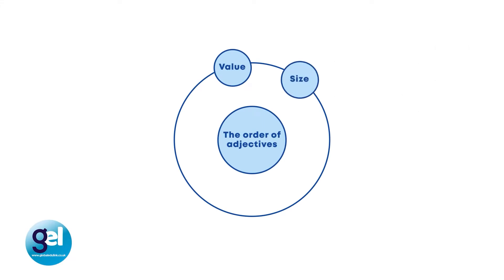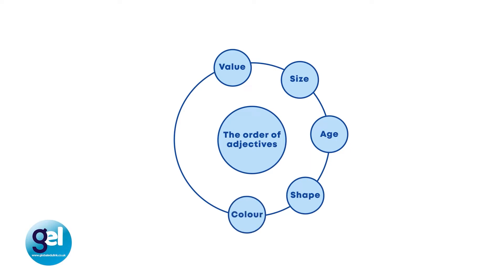Now we need to consider the order of adjectives. Adjectives usually go in this order: value, size, age, shape, colour, origin and material. So we can see adjectives do have a set order. But remember, it's quite rare that students are going to use more than three adjectives together in a sentence. Give learners a few phrases to remember and to help raise awareness of the order of adjectives.